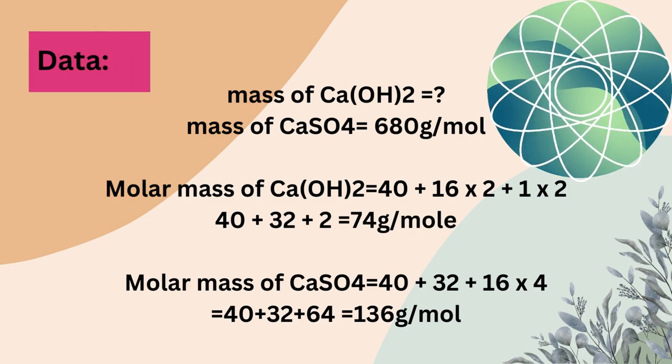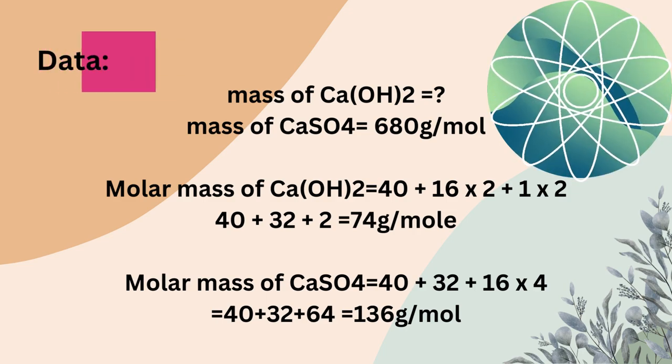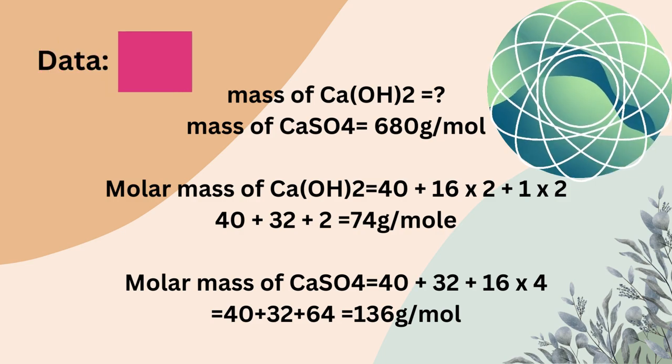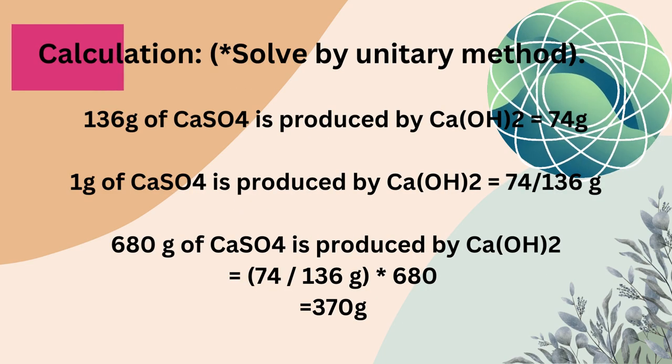Molar mass of calcium sulfate: 40 plus 32 plus 16 times 4 equals 40 plus 32 plus 64 equals 136 grams per mole.